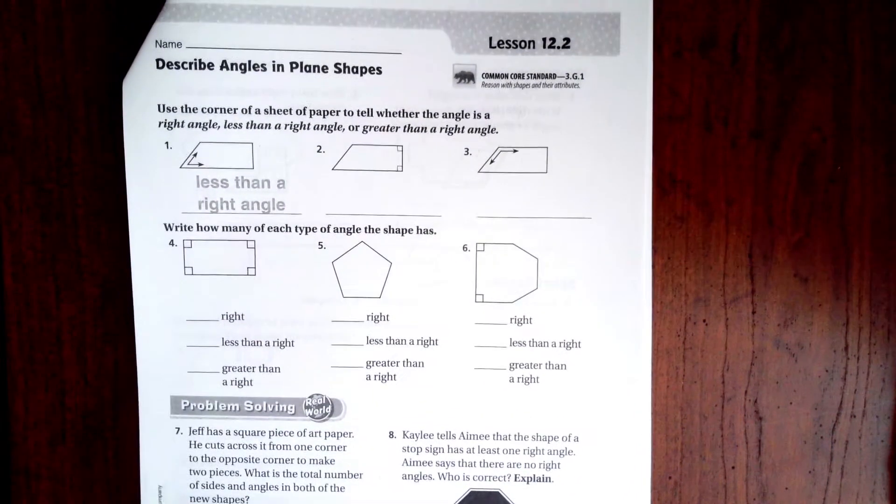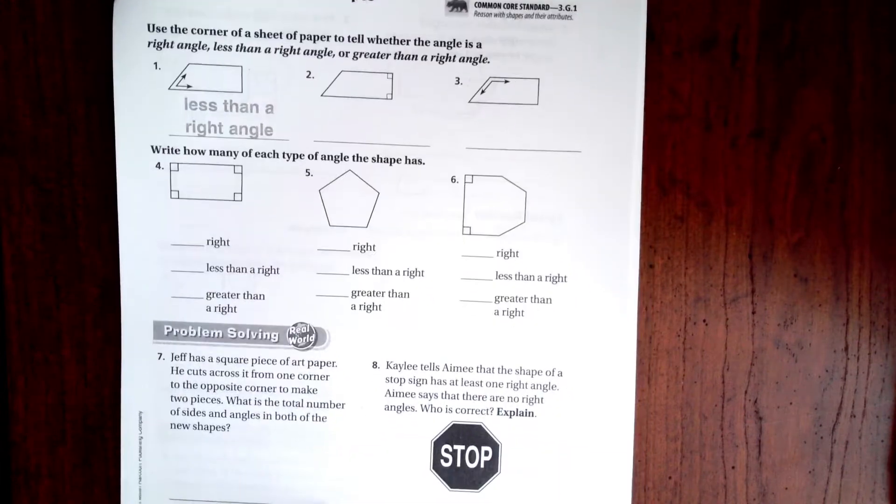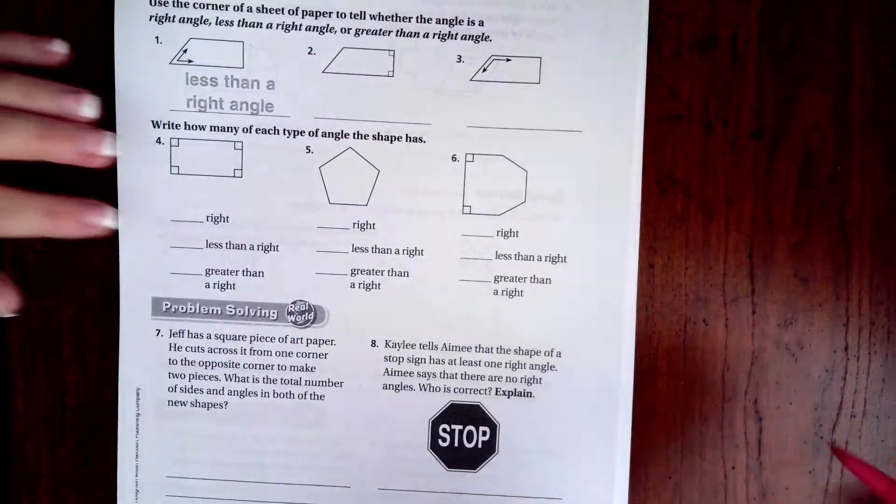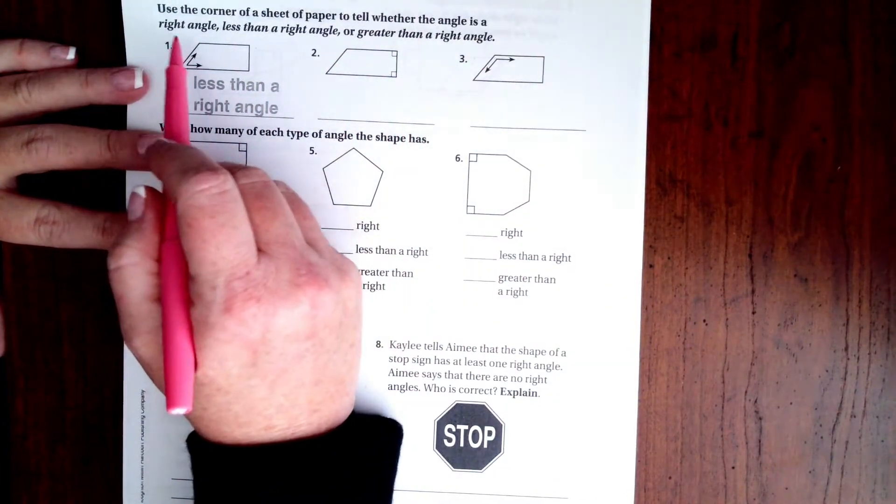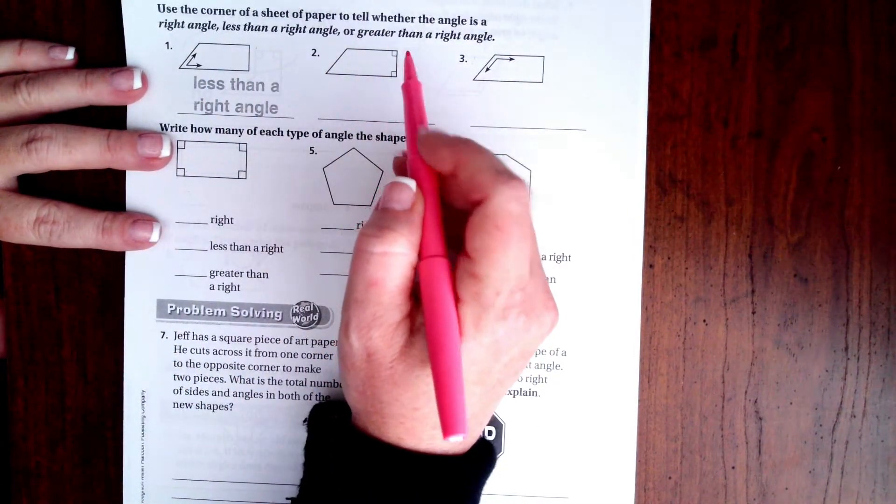Hi guys, welcome to third grade Chapter 12 Lesson 2. We're going to go ahead and get started. All these want to know is if this is a right angle, which means it has the little boxes in here.